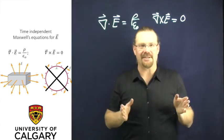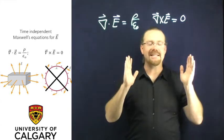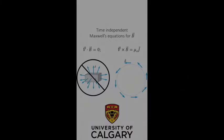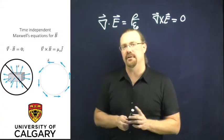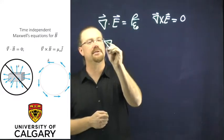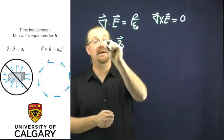Magnetic fields, on the other hand, are completely different. Magnetic fields have a zero divergence everywhere.